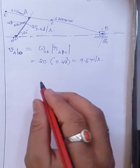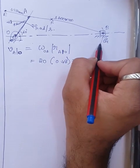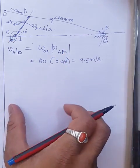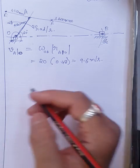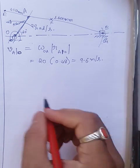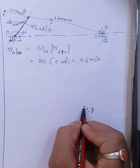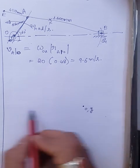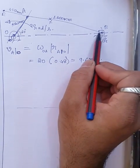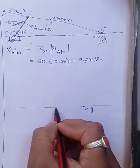Now we start constructing the velocity diagram. Point O is fixed and point G is the ground — both have zero velocity. On the velocity diagram, distances represent velocities, so O and G both coincide at the same point. We use lowercase o and g for the velocity diagram. During the rotation, point B is moving to the left, so the velocity vector of the slider acts in that direction.